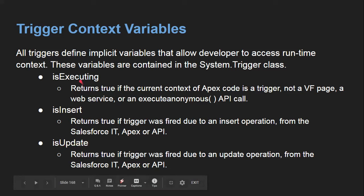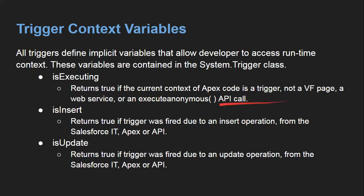You need to use them like Trigger.isExecuting, Trigger.isInsert, Trigger.isUpdate — this is how you call them. 'isExecuting' returns true if the current context of Apex code is a trigger, not a Visualforce page, web service, or execute anonymous API call. 'isInsert' returns true if the trigger was fired due to an insert operation.